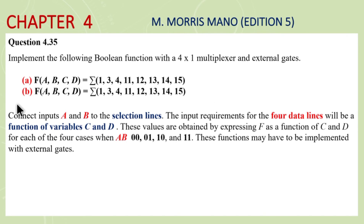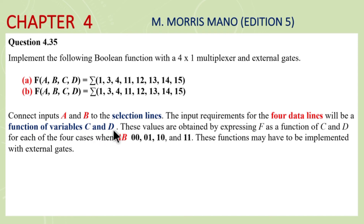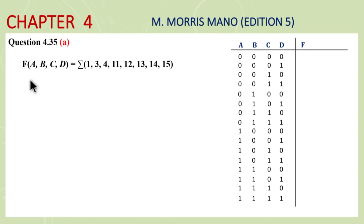Bismillah. Exercise question 4.35: Implement the following boolean functions with a 4-to-1 multiplexer and external gates. We have a boolean function in sum of minterms form with 4 variables. The given condition is that in 4 variables, two variables A and B will be used as multiplexer select lines, and the remaining two variables C and D will be applied to the data lines. We will fulfill this boolean function with a 4-to-1 size multiplexer because the function has 4 variables.